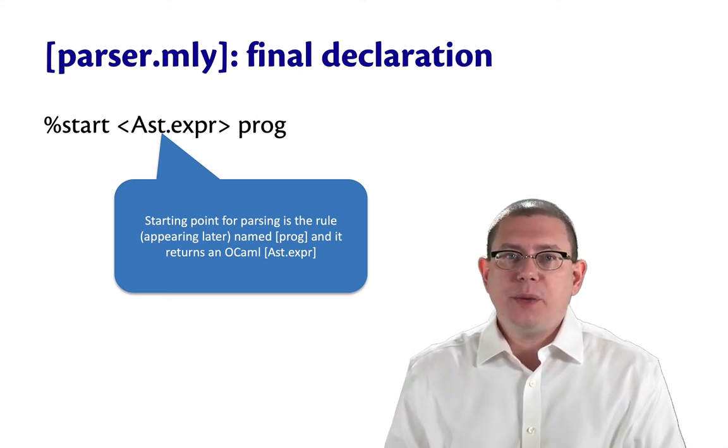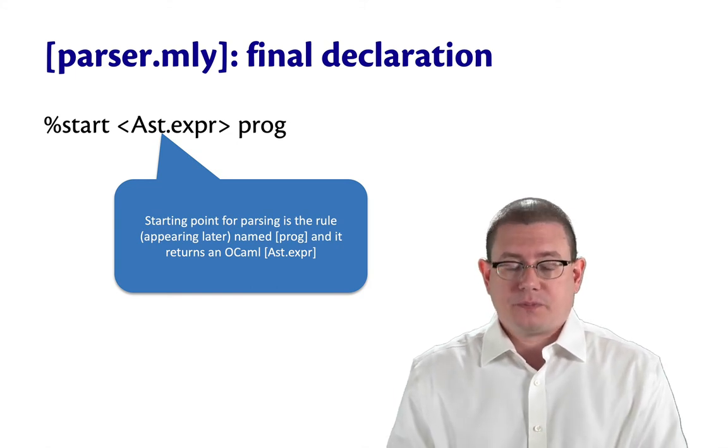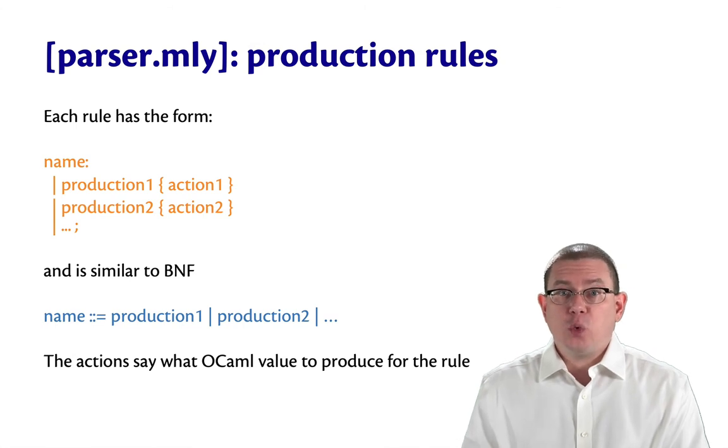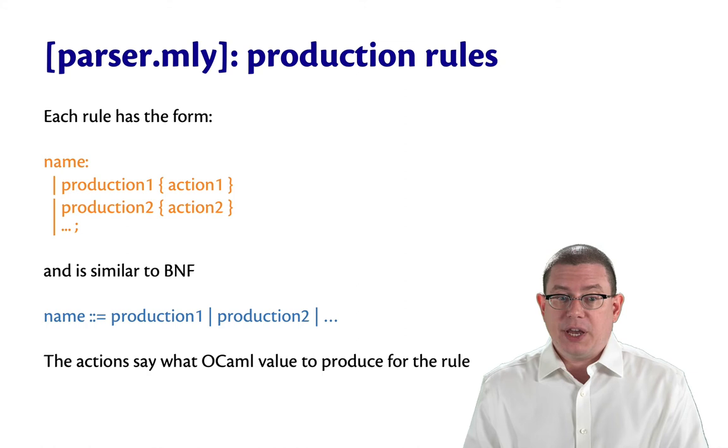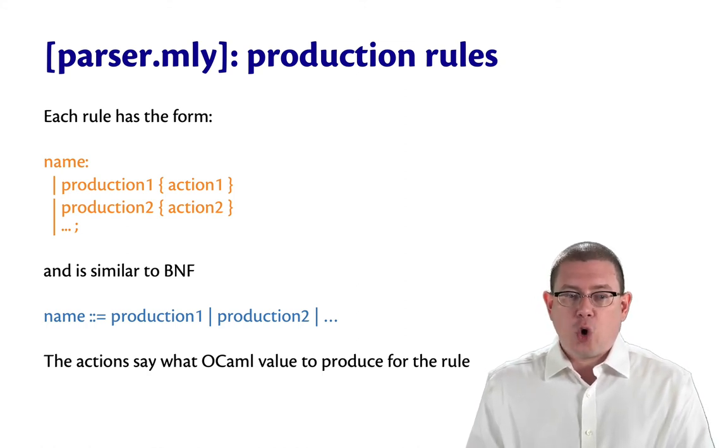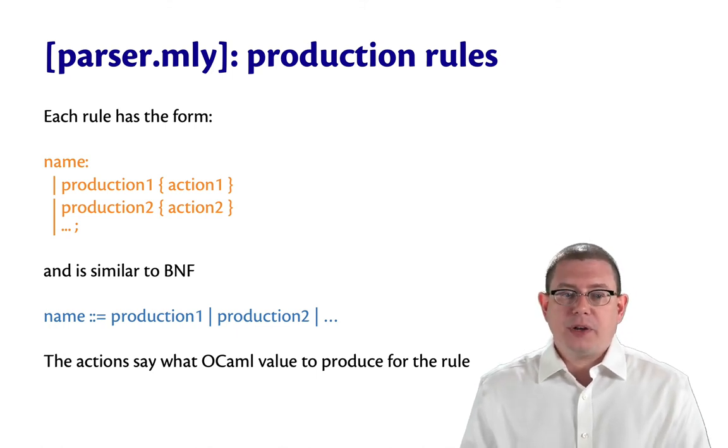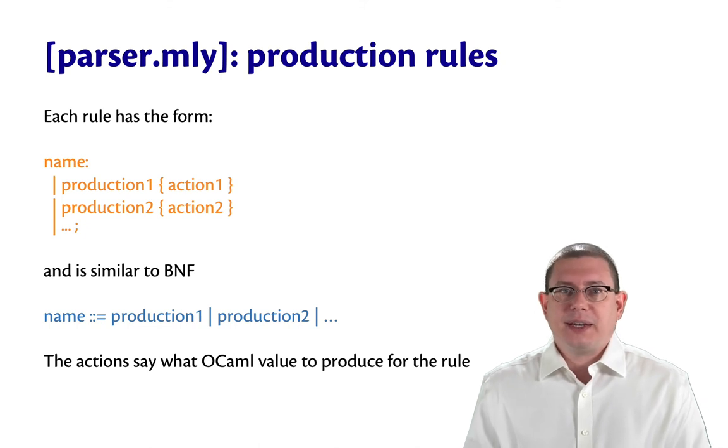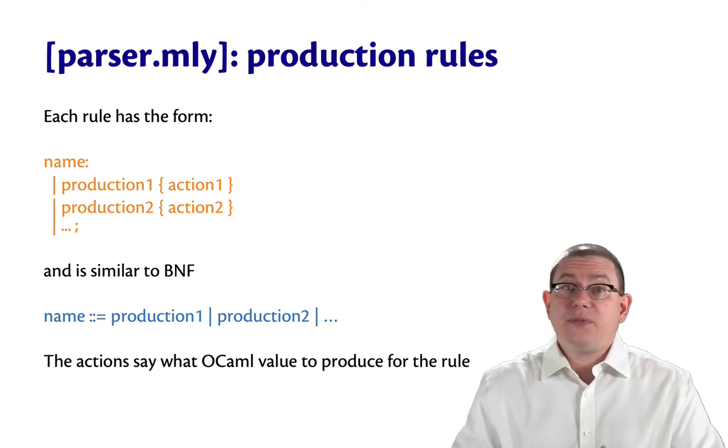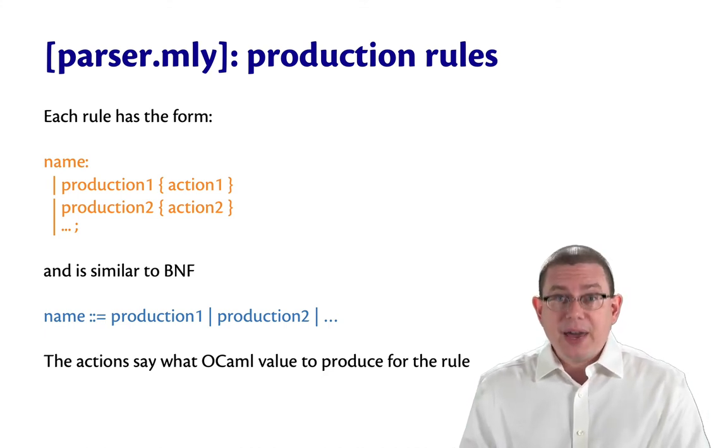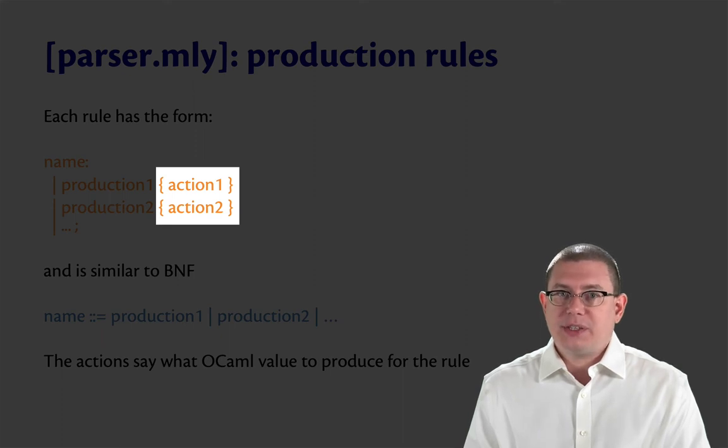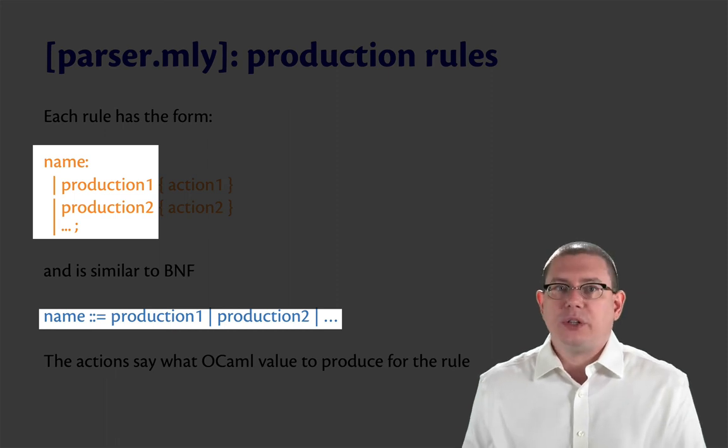We had a declaration in it that said the starting point for parsing was the rule named prog, which we chose ourselves. And we annotated that with the return type, the OCaml type that would be returned by parsing. After that, we had some production rules that corresponded more or less to the rules in the grammar that I just showed you. So every rule had the form name, colon, and some vertical bars, a bunch of productions that could be part of it, and then an action in curly braces. That's sometimes called a semantic action, but that's a little confusing because we're not doing semantic analysis here. So I'm just going to call it an action. This is very similar to how a BNF will have a meta variable name, colon colon equals, and then a bunch of productions separated by vertical bars. The main difference is that in the mly file, we actually add in those actions in curly braces that say what to return as the OCaml result, as opposed to just what constitutes a legal expression in the language.